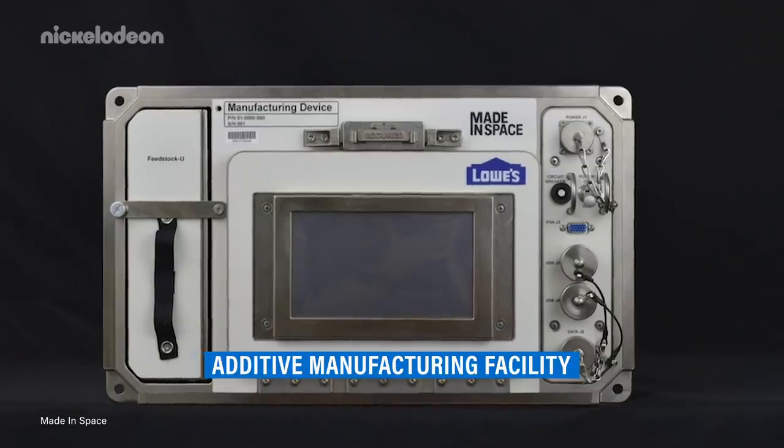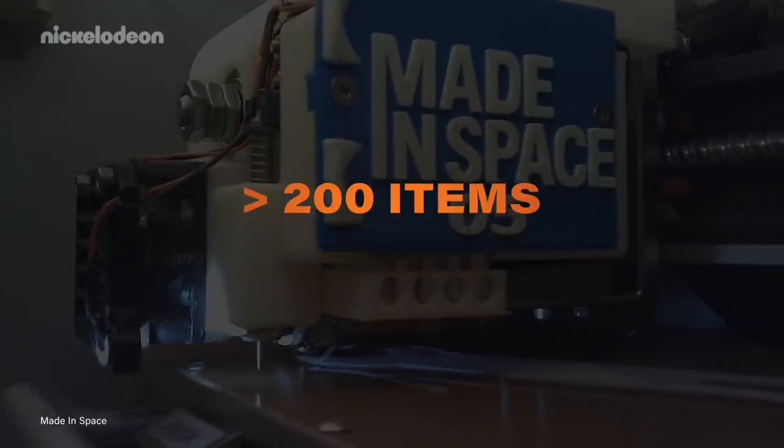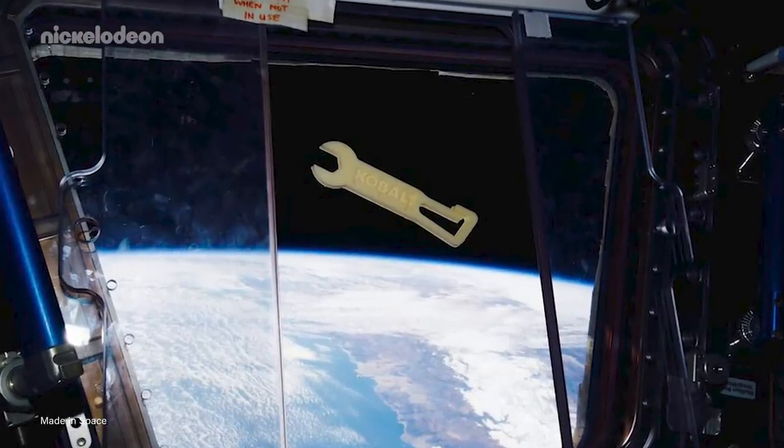This isn't Made in Space's first time printing in microgravity. In 2014, astronauts were able to 3D print the very first object in space, which led to establishing a permanent printing facility on the ISS called the Additive Manufacturing Facility, which has now printed more than 200 items for astronauts on board. The era of waiting months for a wrench is now behind them.